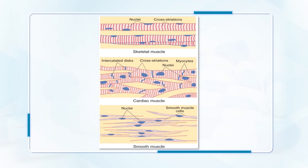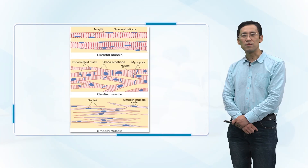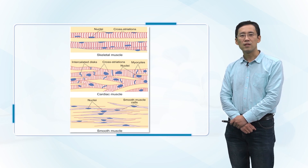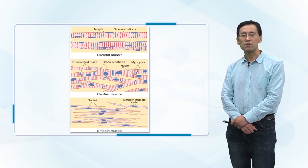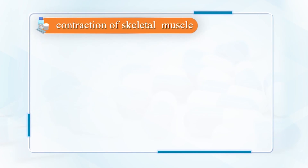The first one is skeletal muscle, in the middle is cardiac muscle, and below is smooth muscle. Let's focus on the contractions of skeletal muscle.